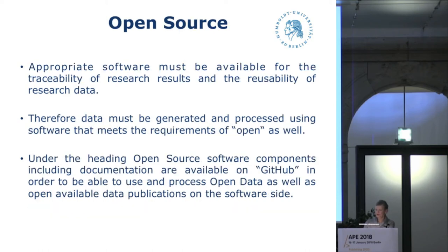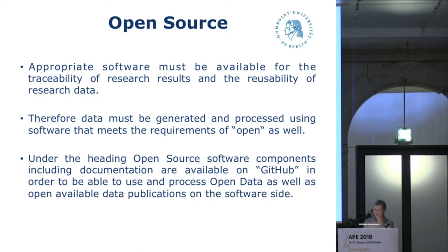One key element for the traceability of research results and the reusability of research data is the availability of appropriate software. Therefore data must be generated and processed using software that meets the requirements of open as well. Under the heading of open source, software components including documentation are available on GitHub, in order to be able to use and process open data as well as openly available data publications on the software side.